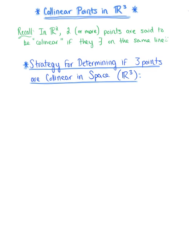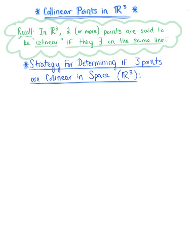I now want to talk about collinear points in space, or in three dimensions. To begin, let's recall that for points in the plane, for points in R2, we say that two or more points are collinear if they exist on the same line. So we now need to establish some strategy for determining if three points are collinear in three dimensions, or in space. Let's let A, B, and C be three points in R3. How do we check if these three points are on the same line?